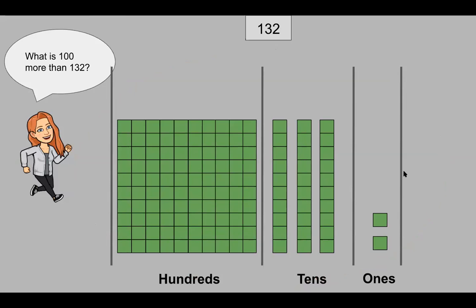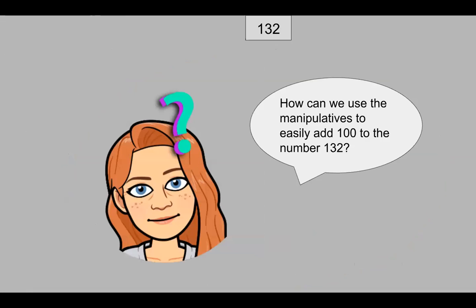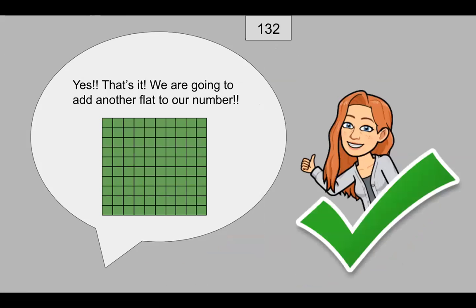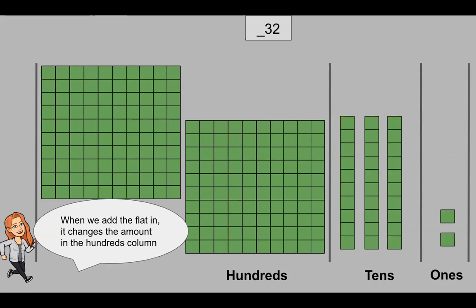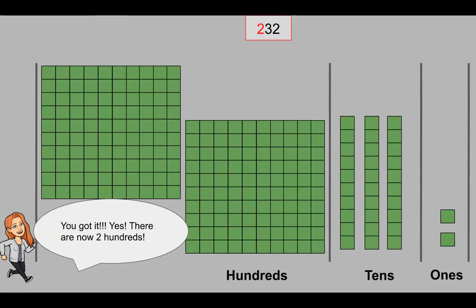What is 100 more than 132? How can we use the manipulatives to easily add 100 to 132? We're going to add another flat to our number. When we add the flat in, it changes the amount in the hundreds column — there are now two hundreds in the hundreds column. Our new number is 232.